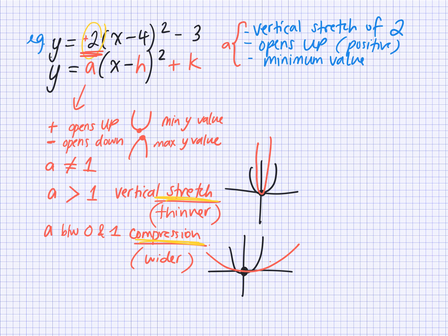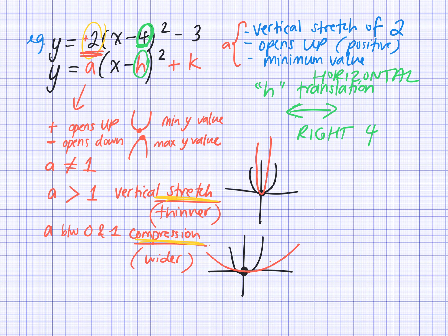H tells us the horizontal translation — so H tells us if it's going left or right. In this example, the H value is actually 4, so it's going 4 spaces to the right. If this was actually a negative 4, it would say X plus 4, which means I know it's going to the left. And then for the K value, you actually have to include the sign.